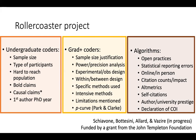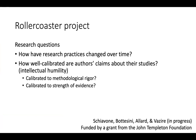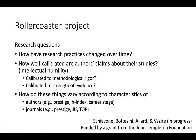We're taking a kitchen-sink approach, measuring all we can with the resources and expertise we have. Our research questions include: how have research practices changed from 2010 to 2020? How well calibrated are authors' claims — do bold strong claims go with really strong clear evidence, or is there a lack of calibration? And how do these things vary according to characteristics of the authors — their prestige, h-index, career stage — and according to characteristics of the journals in terms of prestige, principles, and whether they're open access?